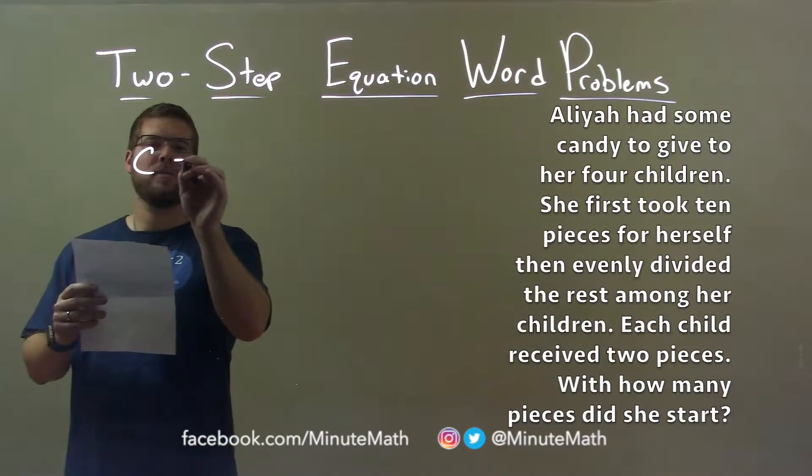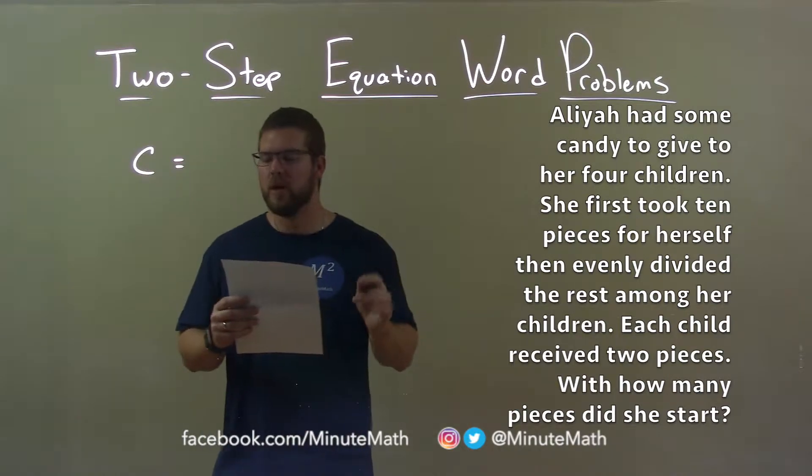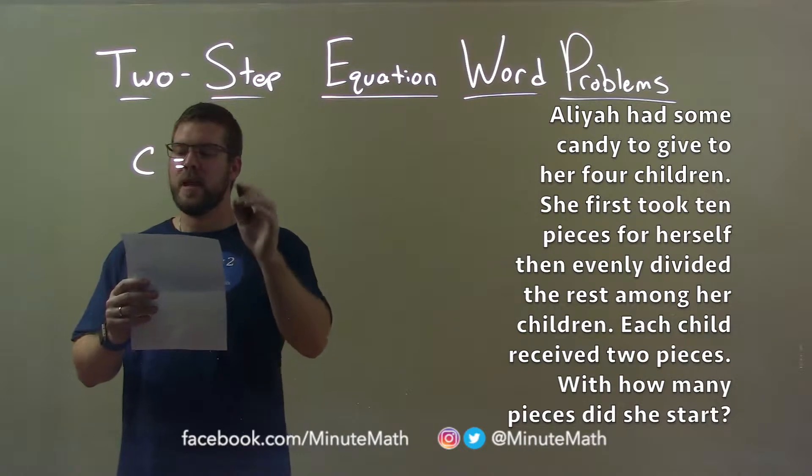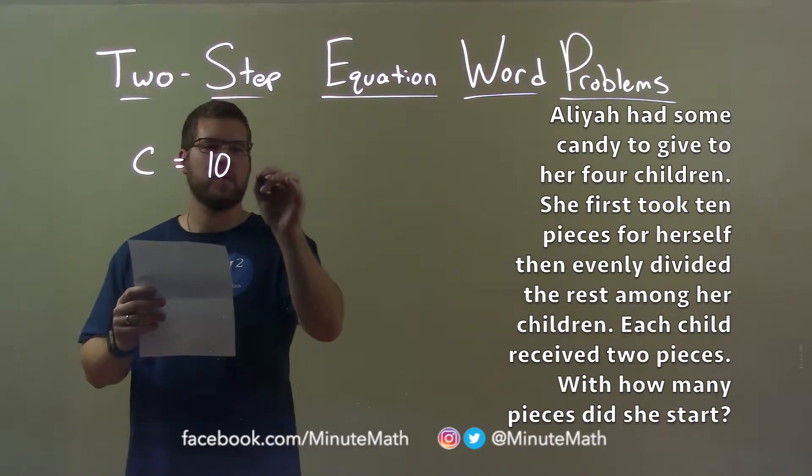Let's let C represent the number of candy that she started with. They said she gave that total amount that she starts with. That's going to be equal to 10 pieces she took for herself plus,